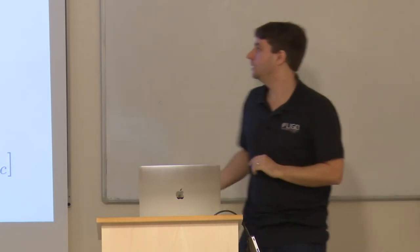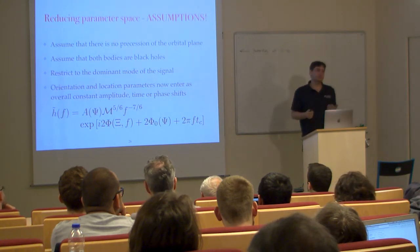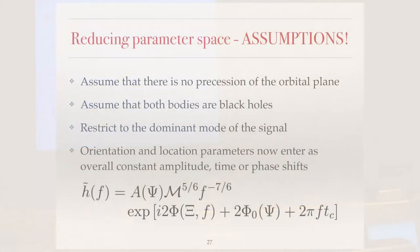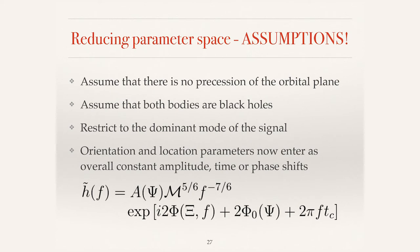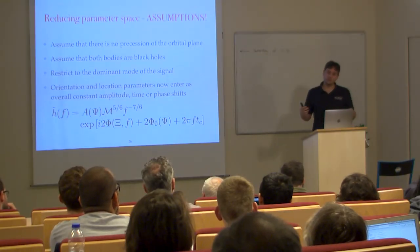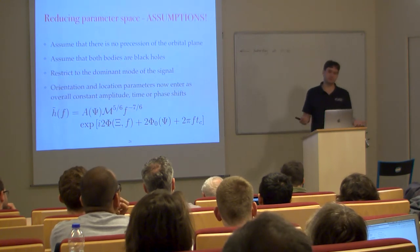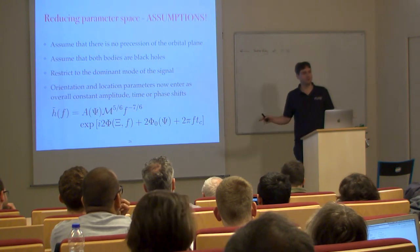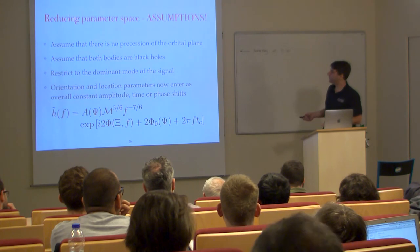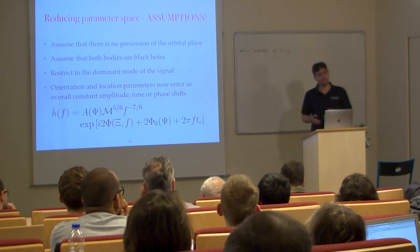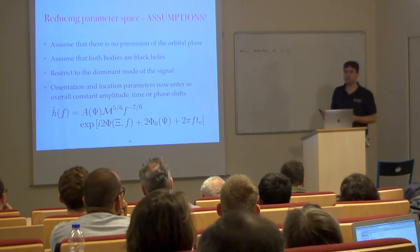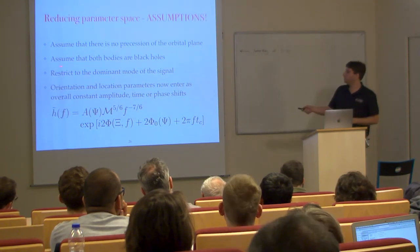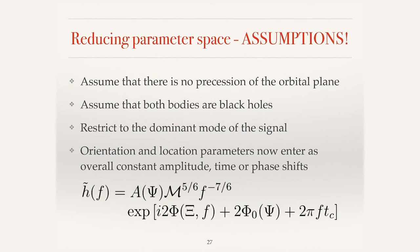The first assumption we make is that there is no precession of the orbital plane — we assume that if the black holes have spin, it must be aligned or anti-aligned with the orbit. The basic idea is that even if signals do have misaligned spins, they will look sufficiently like a non-precessing system that we will find them anyway. Studies show that unless you have quite high mass ratio systems in unfavorable configurations, this assumption doesn't significantly hurt our detection rate.